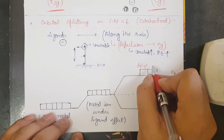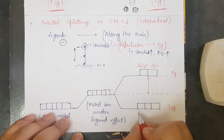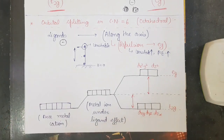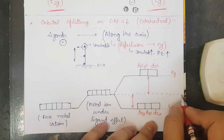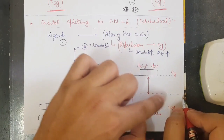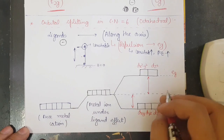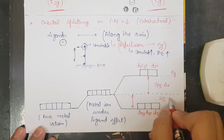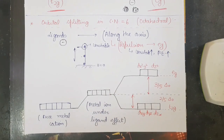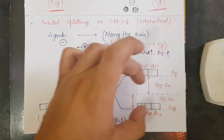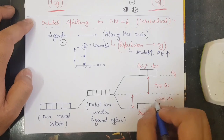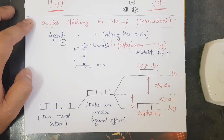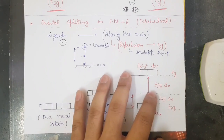In the energy diagram, the eg orbitals rise to +3/5 Δ₀ above the barycenter (where potential energy = 0), and the t2g orbitals drop to -2/5 Δ₀ below it. The net energy difference sums to Δ₀. In many books you will see -2/5 and +3/5 — the sign depends on the direction convention being used.